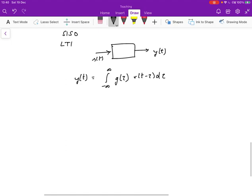And because it's causal, we can turn this into zero. And so we get this integral zero to infinity, g tau, r, t minus tau, d tau.